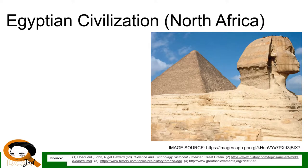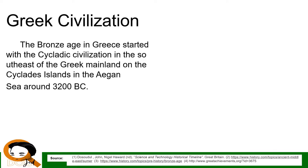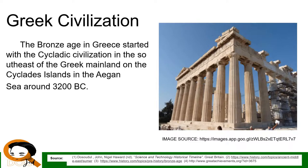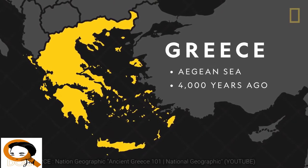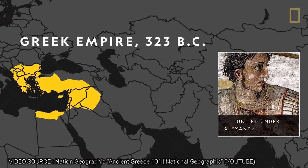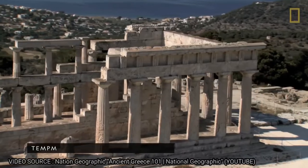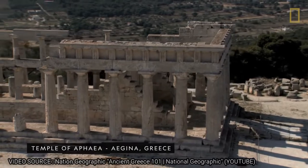The Egyptian Civilization in North Africa is famous for the papyrus, hieroglyphics, pyramids, and cosmetics. The Egyptians also used the clepsydra, or the water clock. The Greek Civilization began with the Cycladic Civilization around 3200 BC on the Cyclades Islands in the Aegean Sea. Around 1600 BC, the Mycenaean Civilization rose with major power centers at Mycenae, Thebes, Sparta, and Athens. Major Greek achievements include in-depth works on philosophy and mathematics, structures and coliseums, alarm clocks, and the water mill.